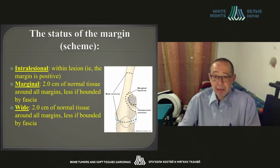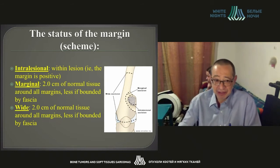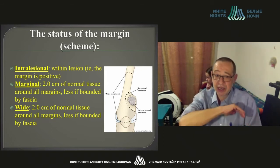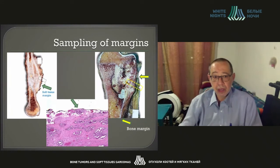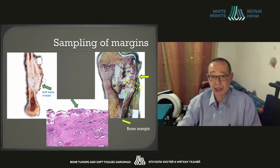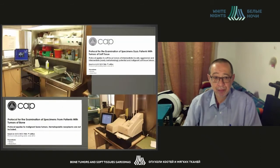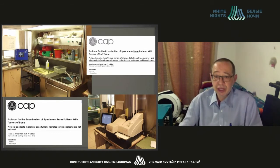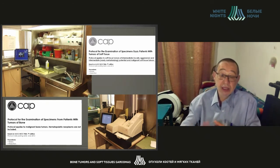For margin evaluation, the optimal resection margins are two centimeters from the macroscopic view of the tumor, or two centimeters from normal tissue along the fascia if the tumor is restricted by fascia. The margins are sampled perpendicularly in order to measure the distance under the microscope. We use standard CAP protocols — College of American Pathology protocols — which provide us an opportunity to find a common mutual language with our clinicians.